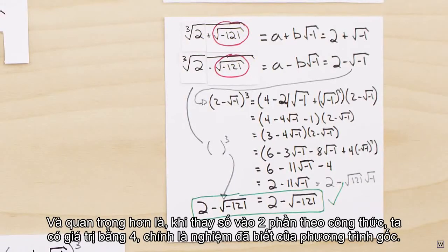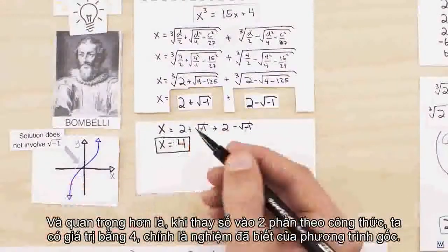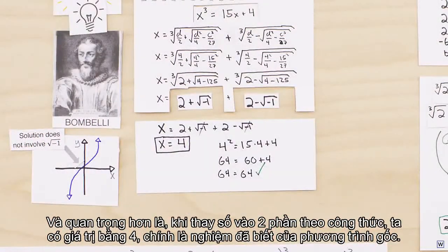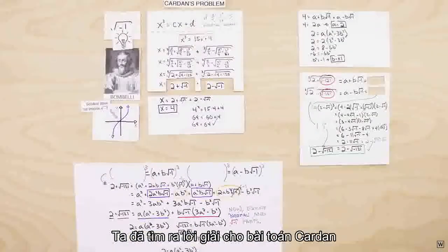And more importantly, when we add the two parts, as the formula tells us to do, we just get four, which we know is a solution to our original equation. We have found the solution to Cardano's problem.